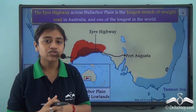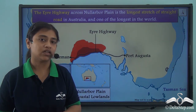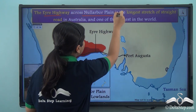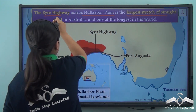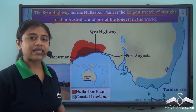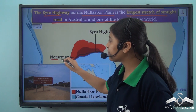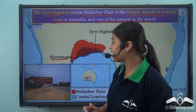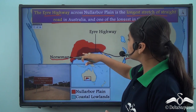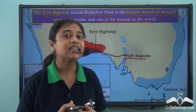Through the Nullarbor Plain we have the longest stretch of straight road in the world. The Eyre Highway across the Nullarbor Plain is the longest stretch of straight road in Australia and one of the longest in the world. It extends from Norseman in Western Australia to Port Augusta in South Australia across the Nullarbor Plain.